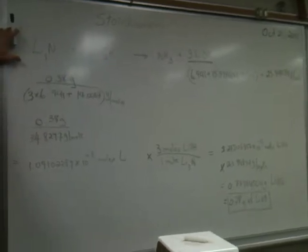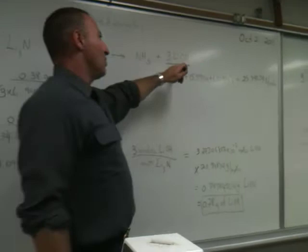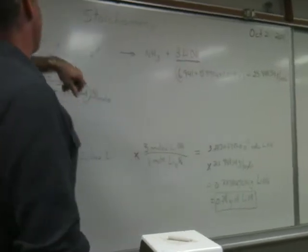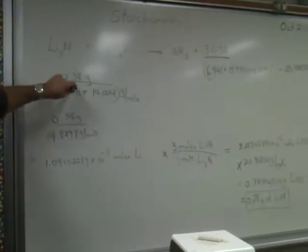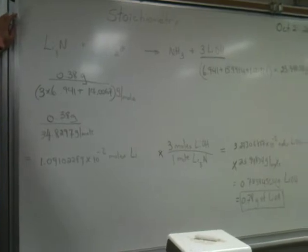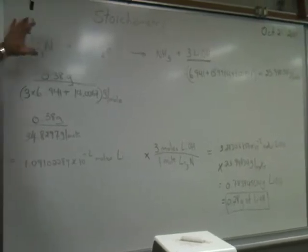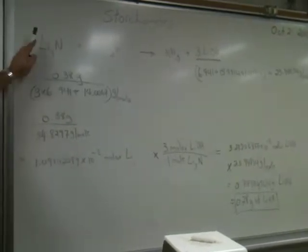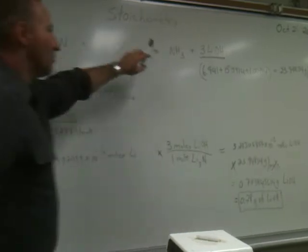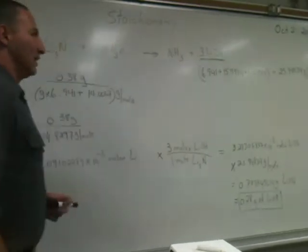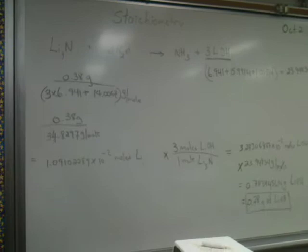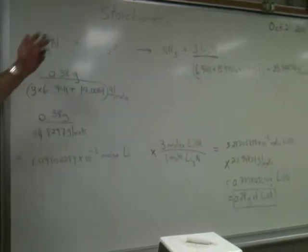we want to predict how much lithium hydroxide is produced if we react 0.38 grams of lithium nitrite. In the balanced reaction, the coefficients, these numbers that appear before each one of the chemicals, represent how many moles are either used or appeared.